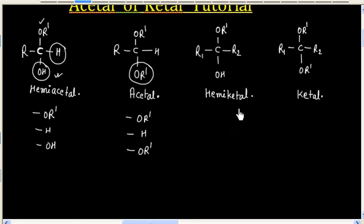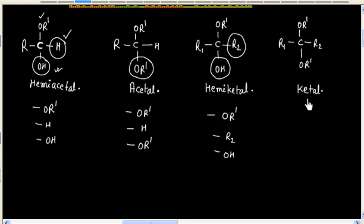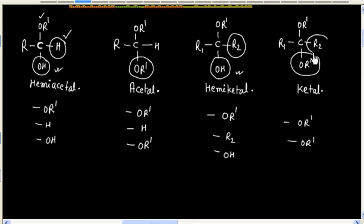Now in the case of hemiketal, this hydrogen is replaced by an alkyl group, so we have one OR group, one alkyl group, and we also have an OH group. Now in the case of ketal, this OH group is replaced by an OR group, so we have two OR groups and one alkyl group.